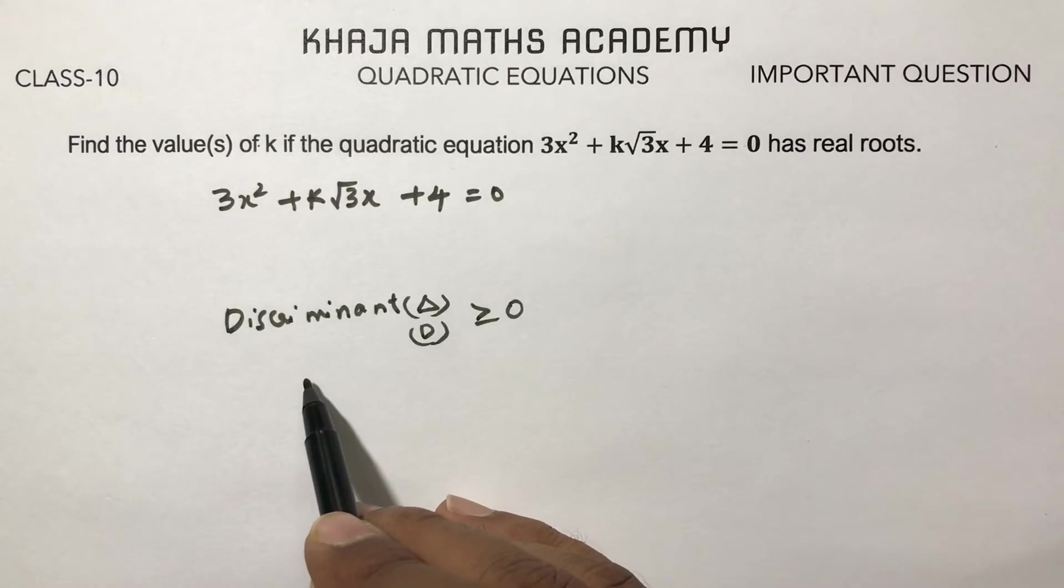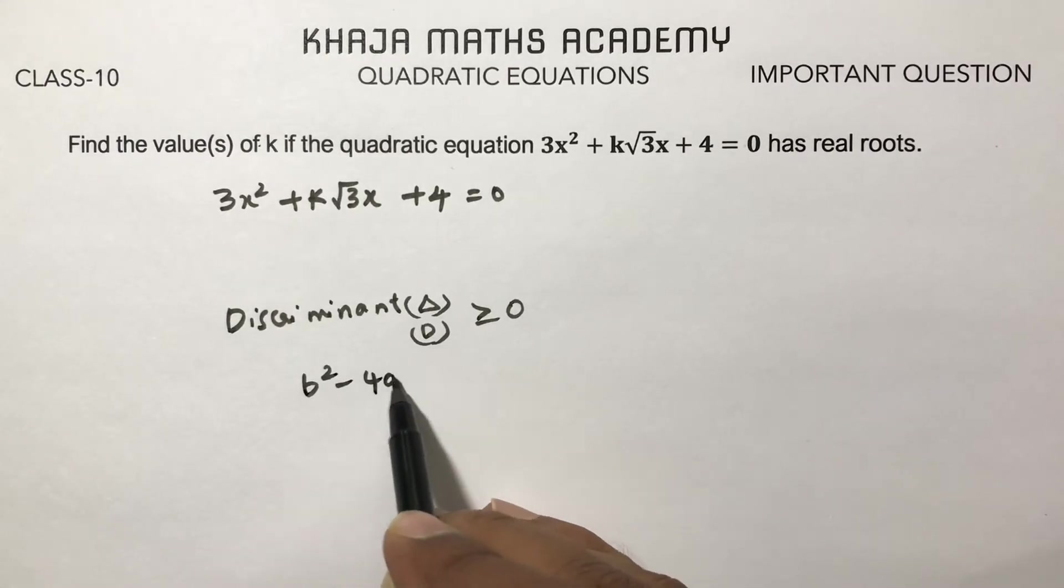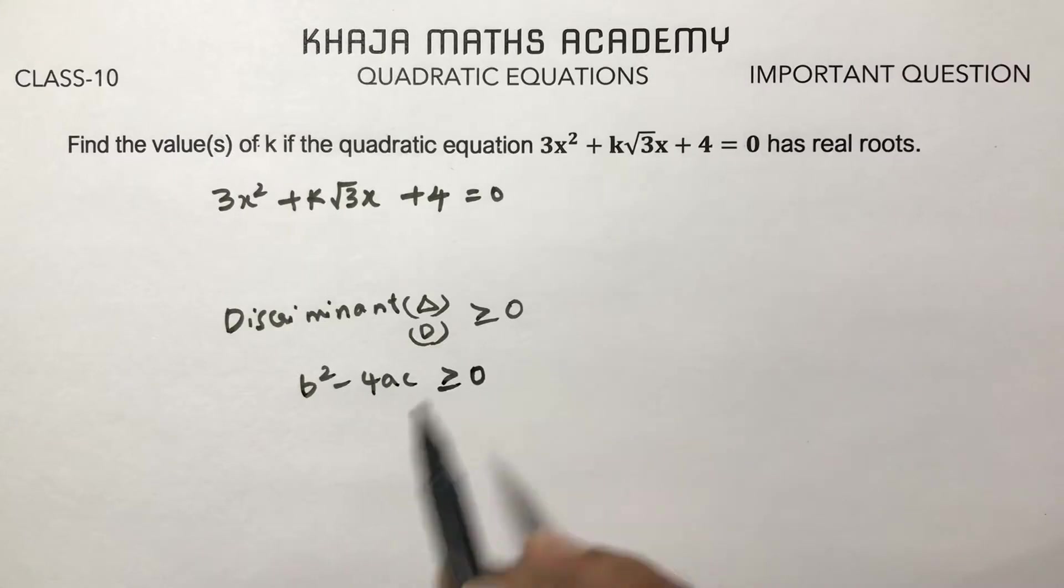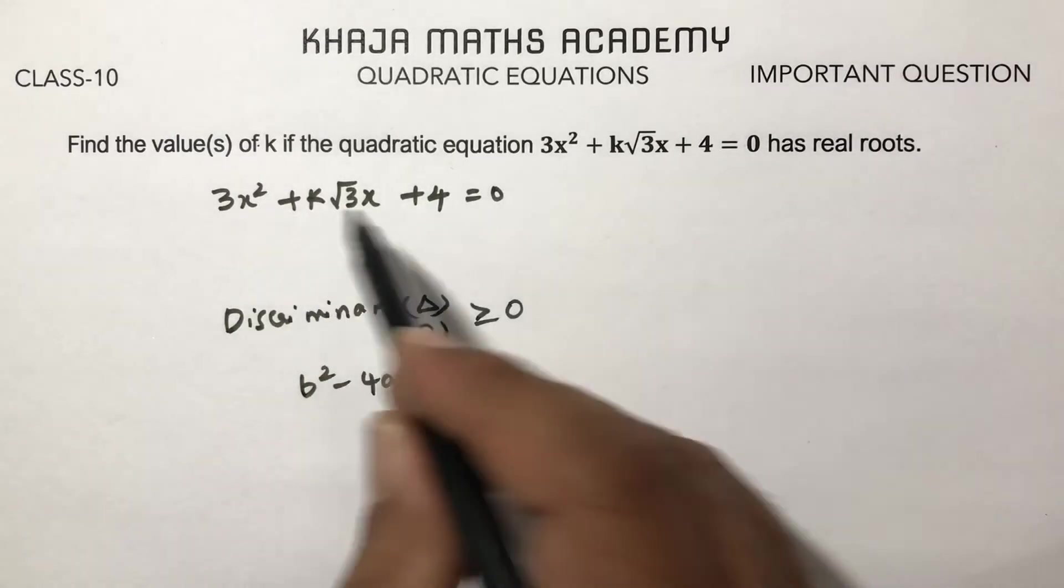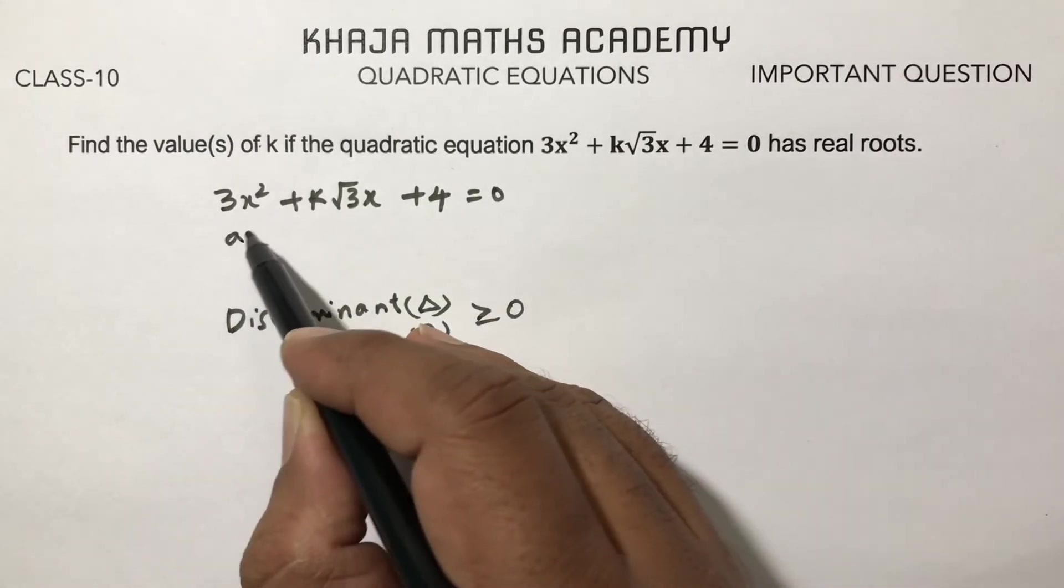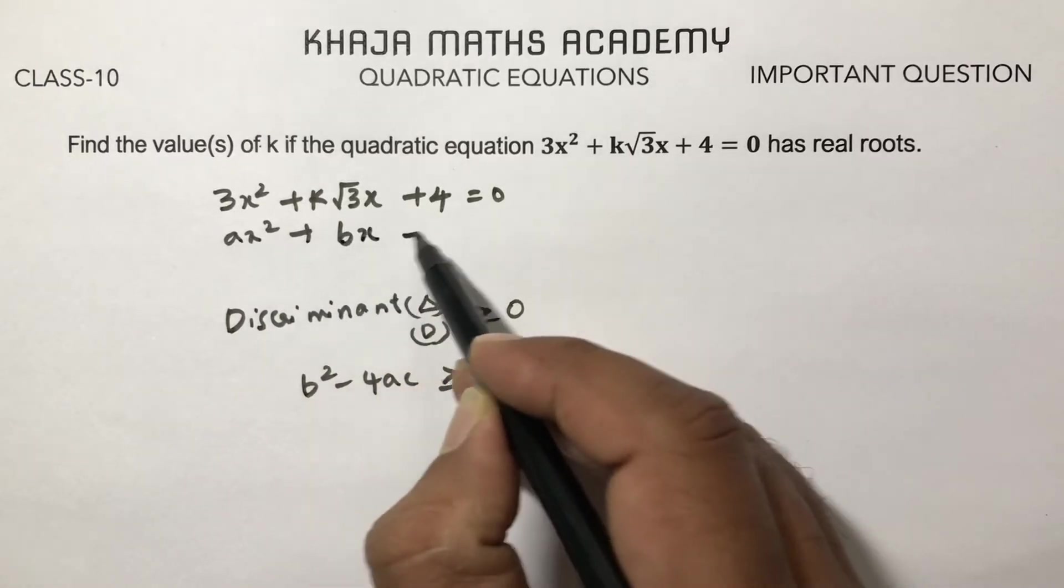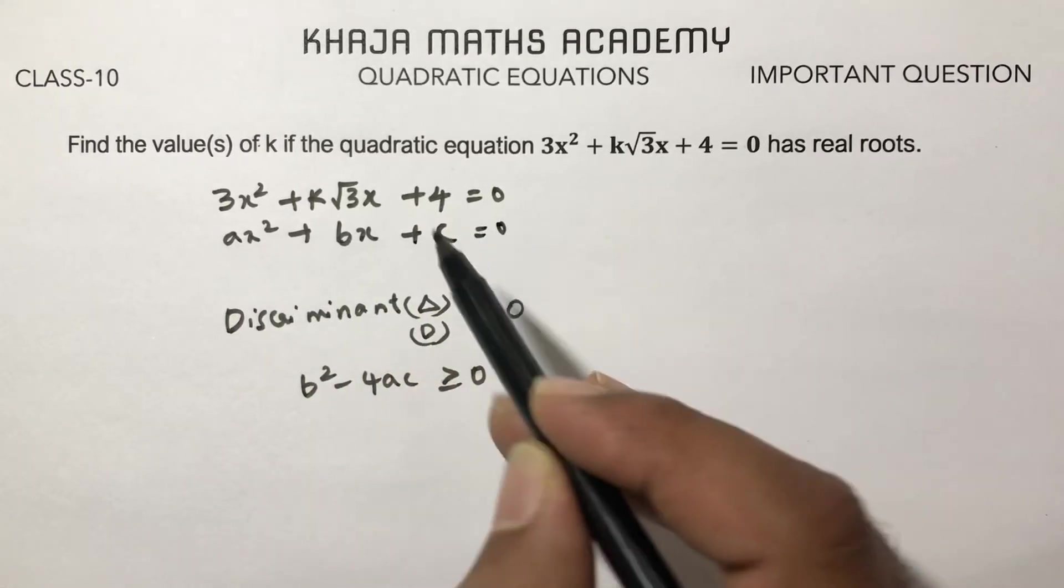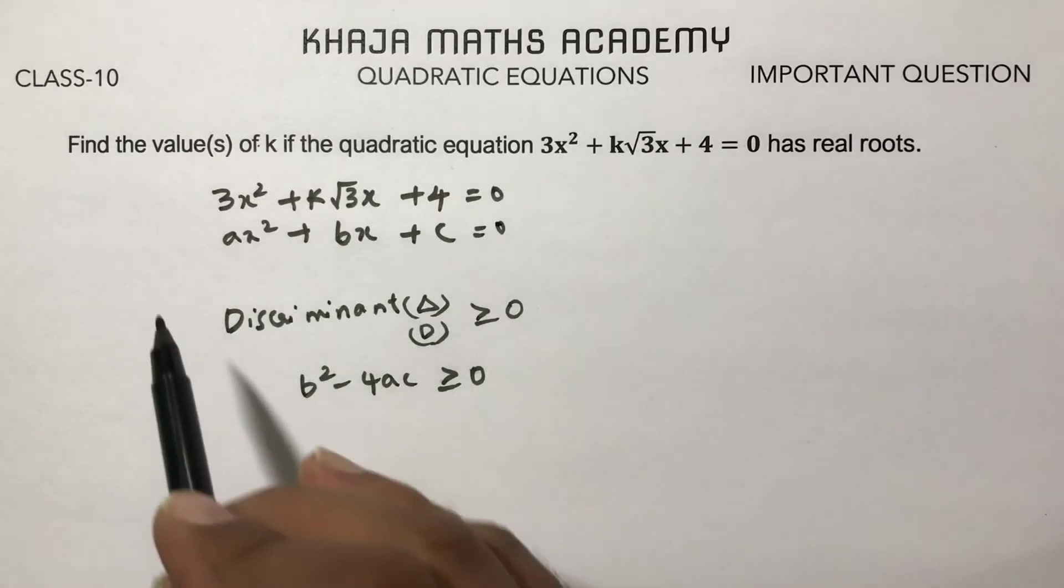So b² - 4ac ≥ 0. Now compare the given quadratic equation with the standard form ax² + bx + c = 0 and find the values of a, b, and c.